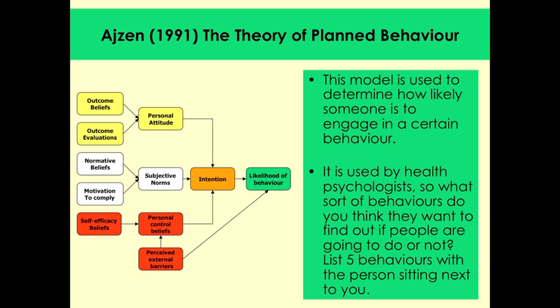The first thing we're going to look at is the very last green box: the likelihood of behaviour. The model is used to determine how likely someone is to engage in a certain behaviour. It's used by health psychologists — for example, looking at the likelihood of someone giving up smoking or binge drinking. You can see it works on two levels: how likely someone is to do something healthy, or something dangerous for their health.